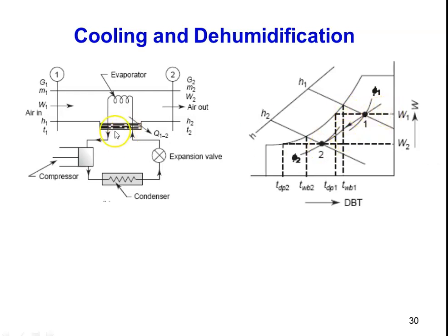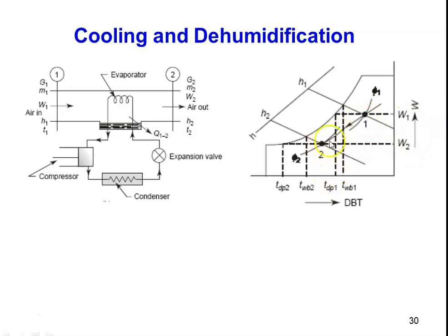The remaining components are the expansion valve, condenser, and compressor — this is a vapor compression refrigeration system where the evaporator coil is placed inside the air duct. On the psychrometric chart, the initial condition has specific humidity W1, enthalpy H1, and relative humidity φ1. The cooling and dehumidification process is shown as an inclined line: specific humidity decreases from W1 to W2, and temperature decreases from T1 to T2. This process is used in summer air conditioning.